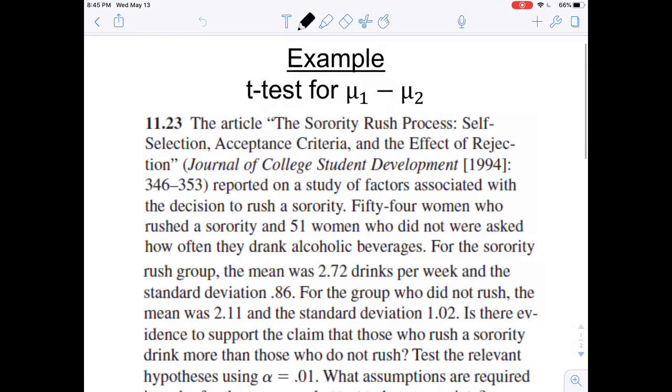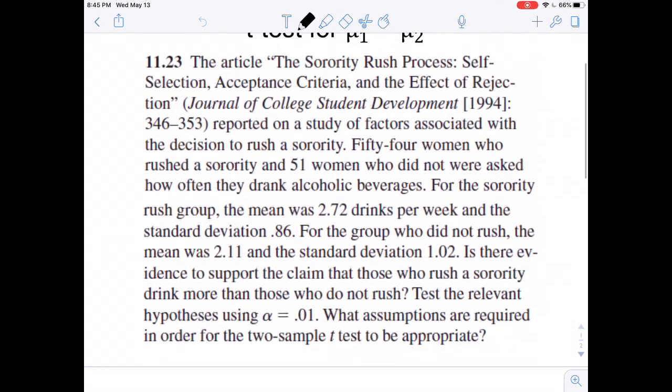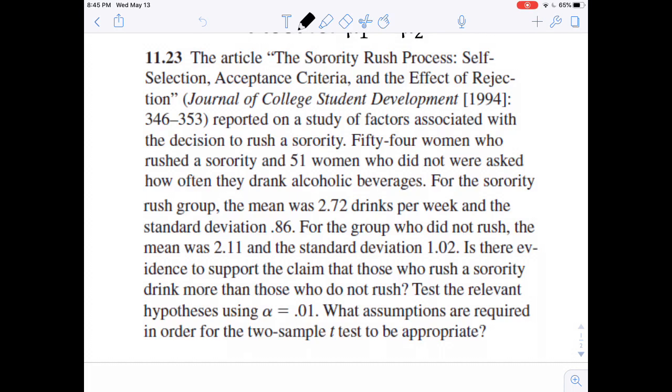The example reads, the article 'The Sorority Rush Process: Self-Selection, Acceptance Criteria, and the Effect of Rejection' reported on a study of factors associated with the decision to rush a sorority. Fifty-four women who rushed a sorority and 51 women who did not were asked how often they drank alcoholic beverages.